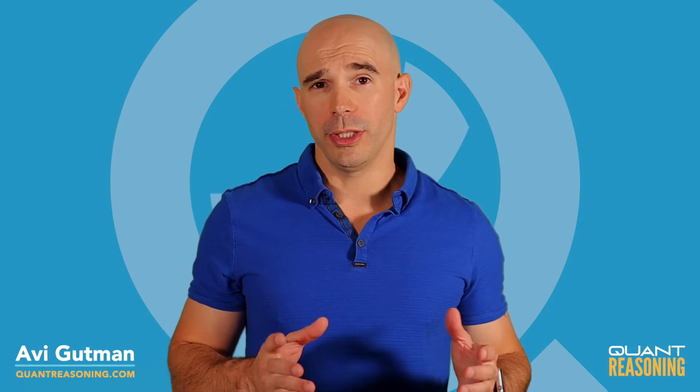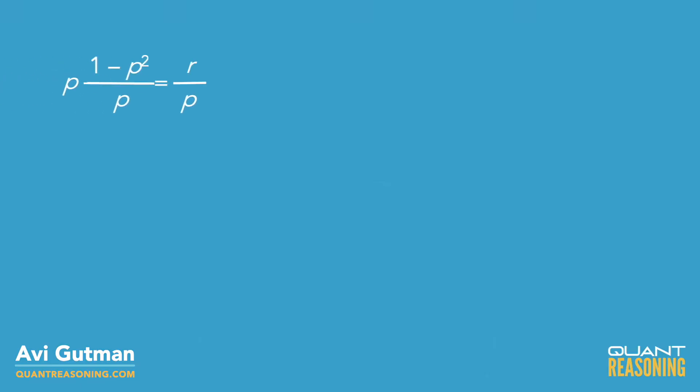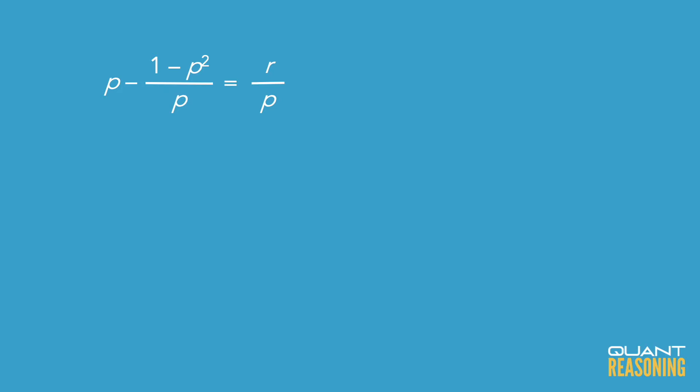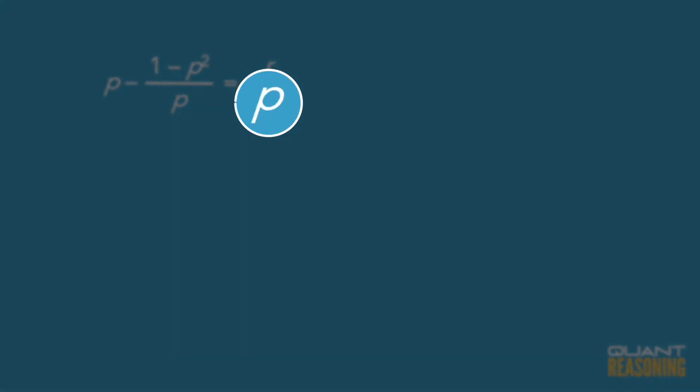So in this question we're getting an equation that's not very pretty, but we're trying to find the value of r. And r is almost kind of isolated on the right hand side of the equation. It just unfortunately has a p underneath it in the denominator.